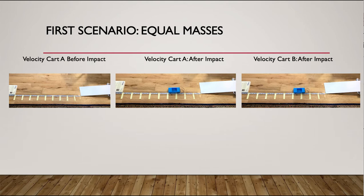This first scenario is really straightforward. Neither cart has any extra mass in it. You've got cart A before impact. You're going to find that velocity. You need the velocity of cart A after impact. You need the velocity of cart B after impact.